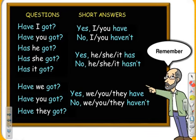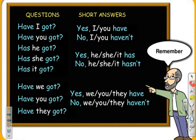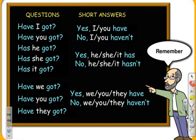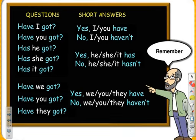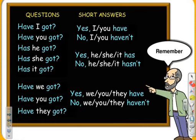Let's read the questions and short answers together. Have I got? Yes, I have — or no, I haven't. Have you got? Yes, you have — or no, you haven't. Has he got? Yes, he has — or no, he hasn't. Has she got? Yes, she has — or no, she hasn't. Has it got? Yes, it has — or no, it hasn't. Have we got? Yes, we have — or no, we haven't. Have you got? Yes, you have — or no, you haven't. Have they got? Yes, they have — or no, they haven't.